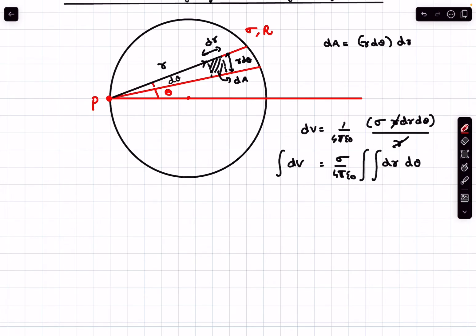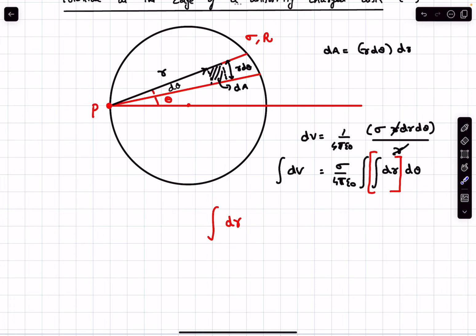Now how do we do this? First of all, we have to determine one integral by assuming the other variable to be constant. For example, let's say we are computing the innermost integral, that is integral dr. Now how do we determine the limits of r? As I said, we have to keep θ constant. The lowermost limit of r is 0, but the uppermost limit of r is this particular value.